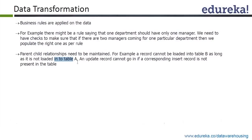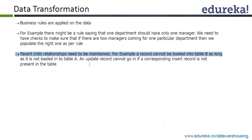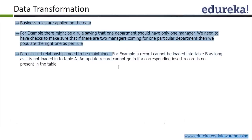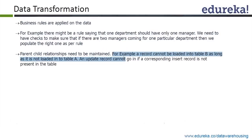Parent-child relationship integrity checks mean that when you are extracting from an OLTP system you might be extracting from multiple tables. You have to maintain integrity between those tables — if you extract one table, ensure you also extract the related table. For loading, the example given is that a record cannot be loaded into table B unless the corresponding record already exists in table A. This is similar to a fact-dimension link: if you load a key into your fact table but it doesn't exist in your dimension table, your data integrity is not maintained. These checks are done during transformation.